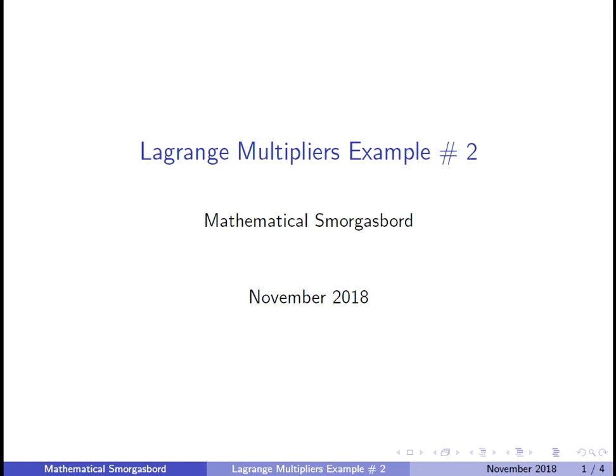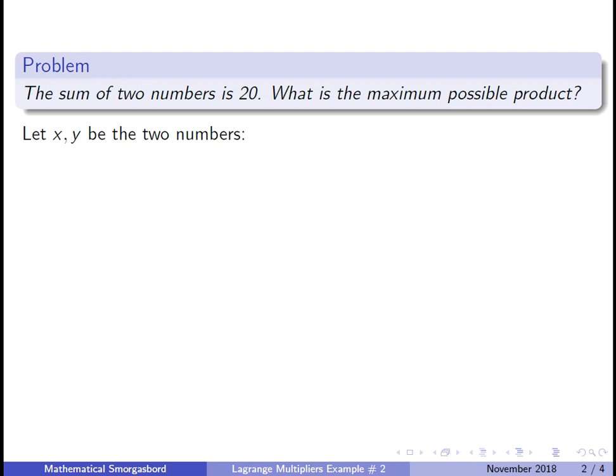Hey guys, we're going to continue our series on Lagrange multipliers by looking at a very simple example of this technique. Probably the simplest example you could actually make. All right, so let's see what it is. We have the sum of two numbers is 20. What is the maximum possible product?